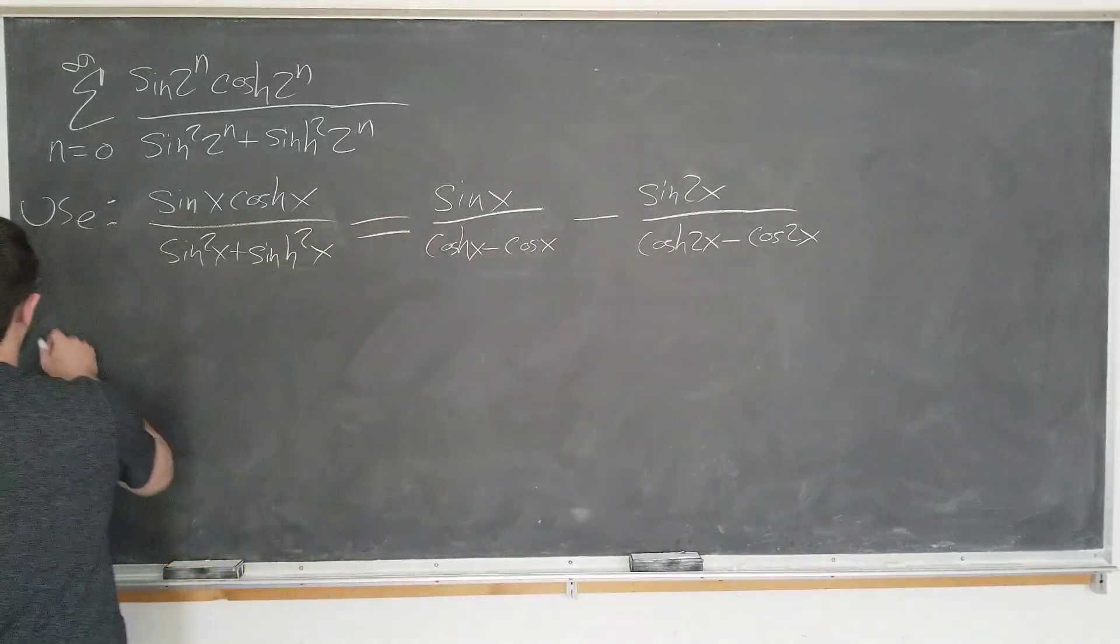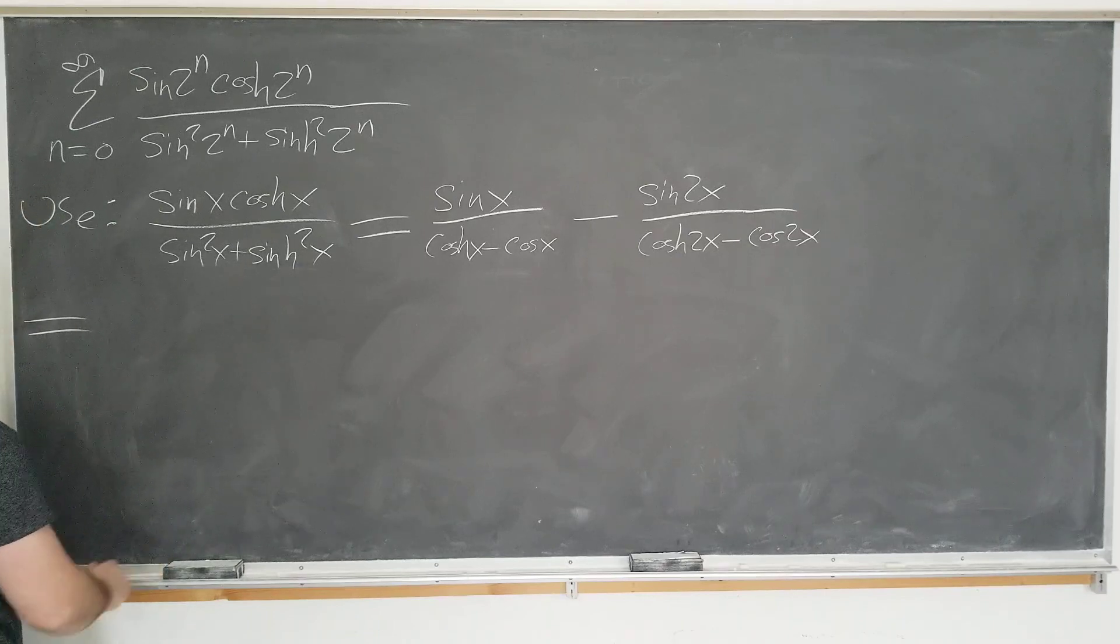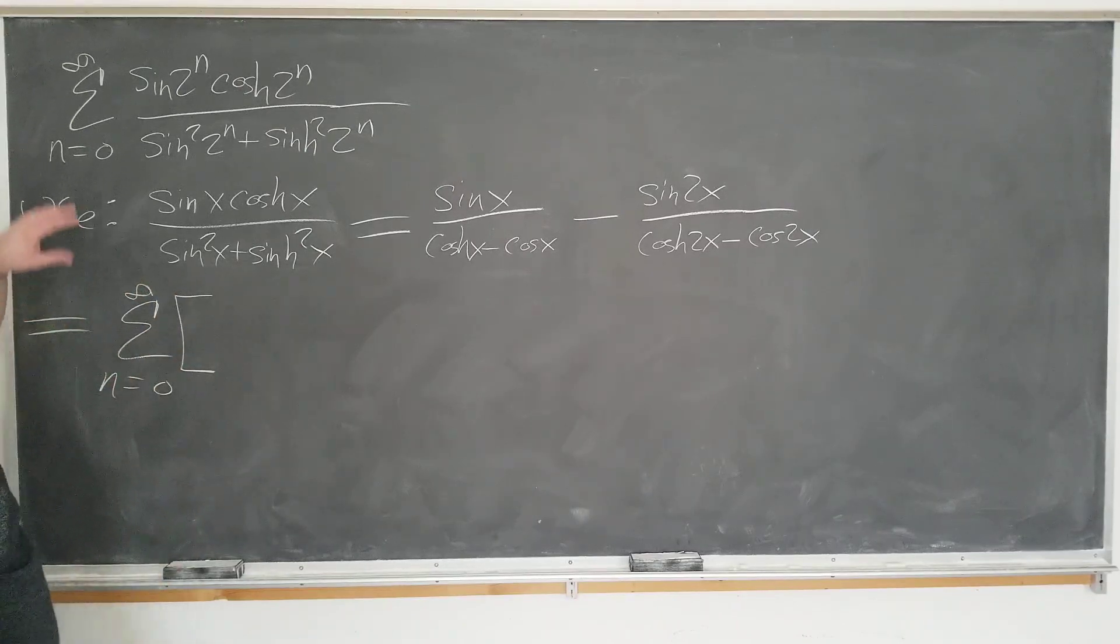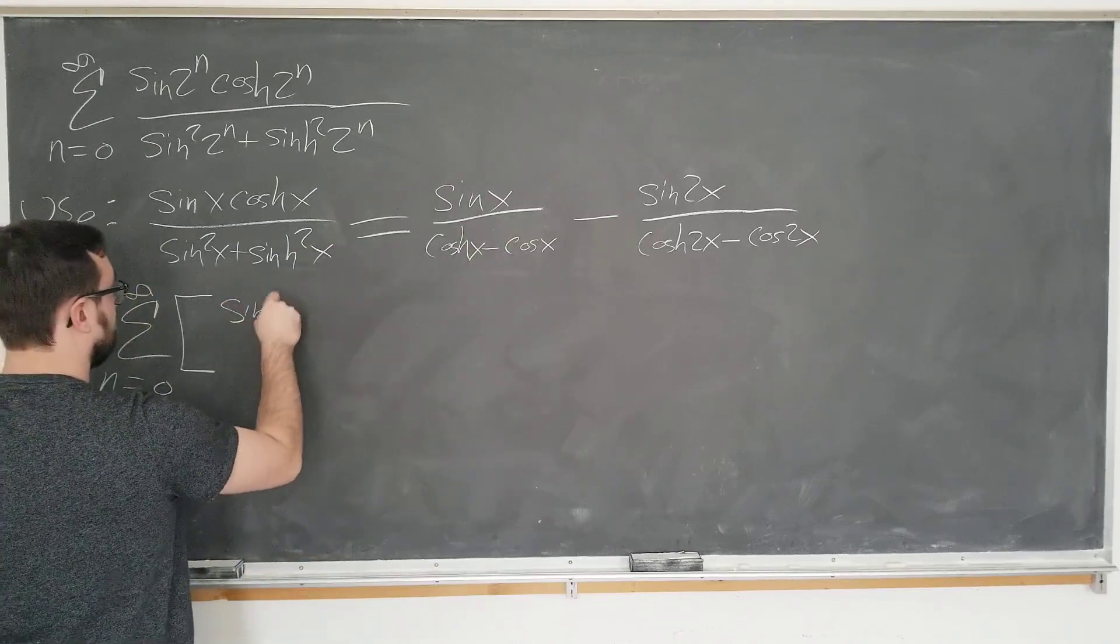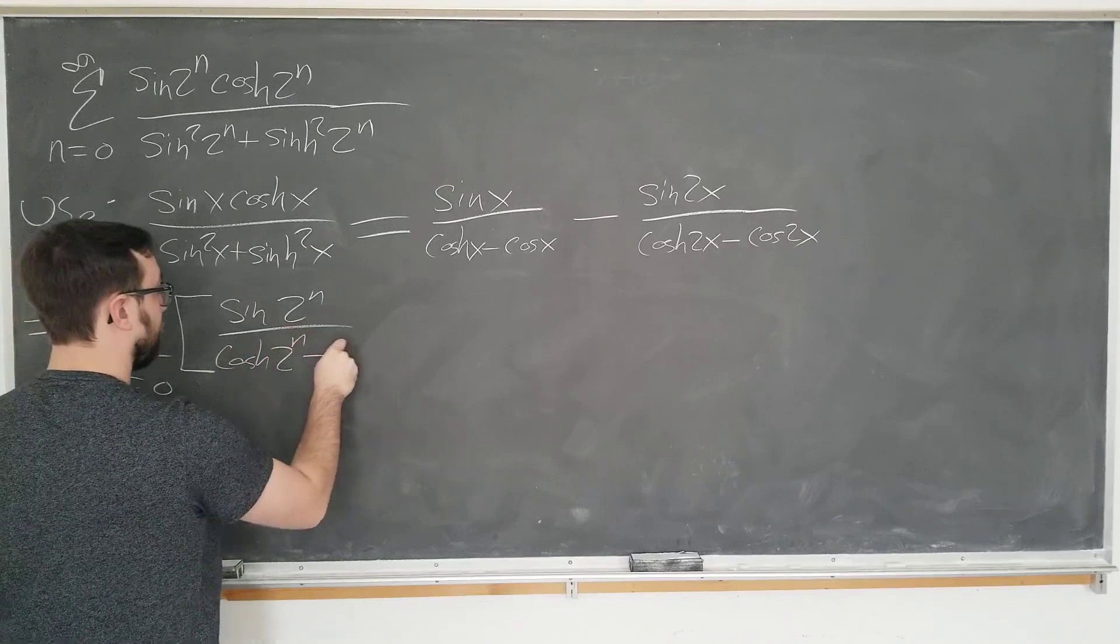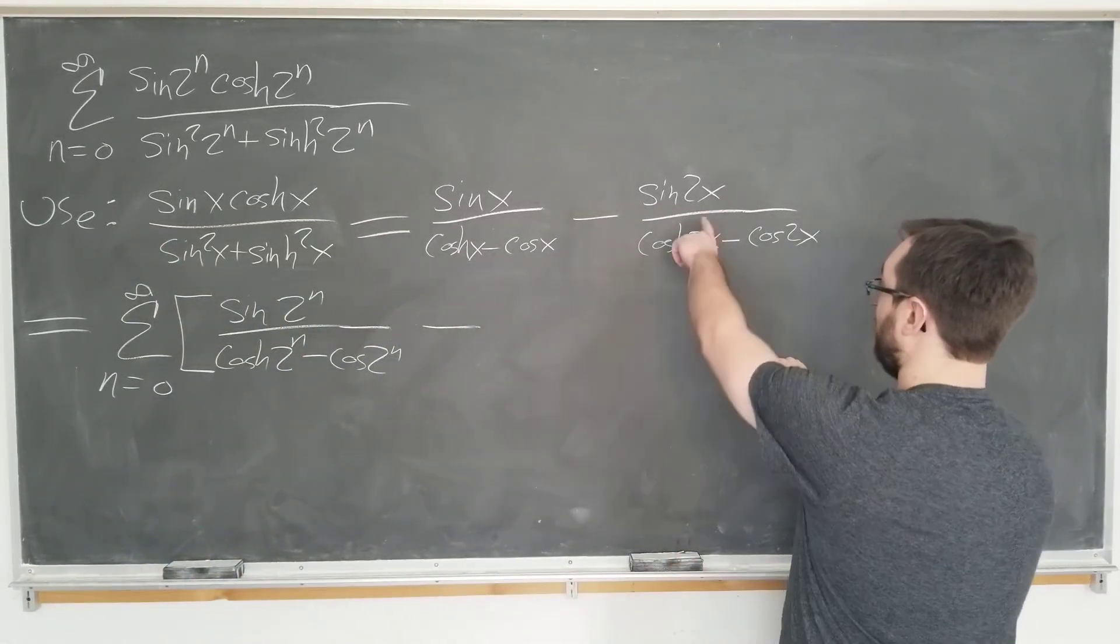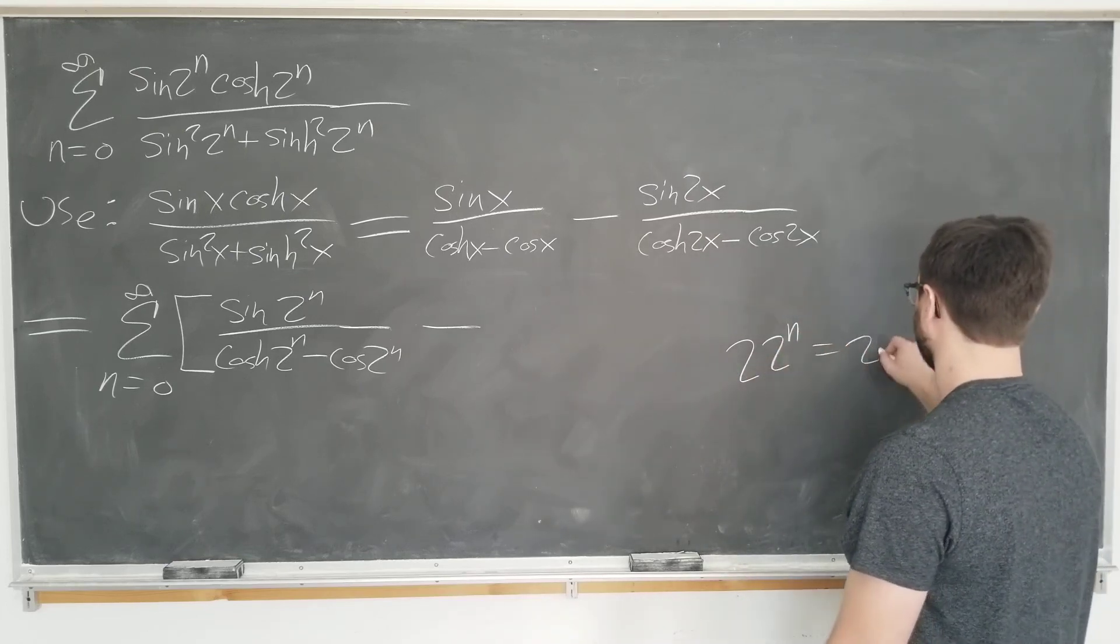So now, the left hand side of our expression is simply going to be sum as n goes from 0 to infinity of, okay, we just take what we have here and replace it with this. So we have sine of 2 to the n over cosh 2 to the n minus cos 2 to the n